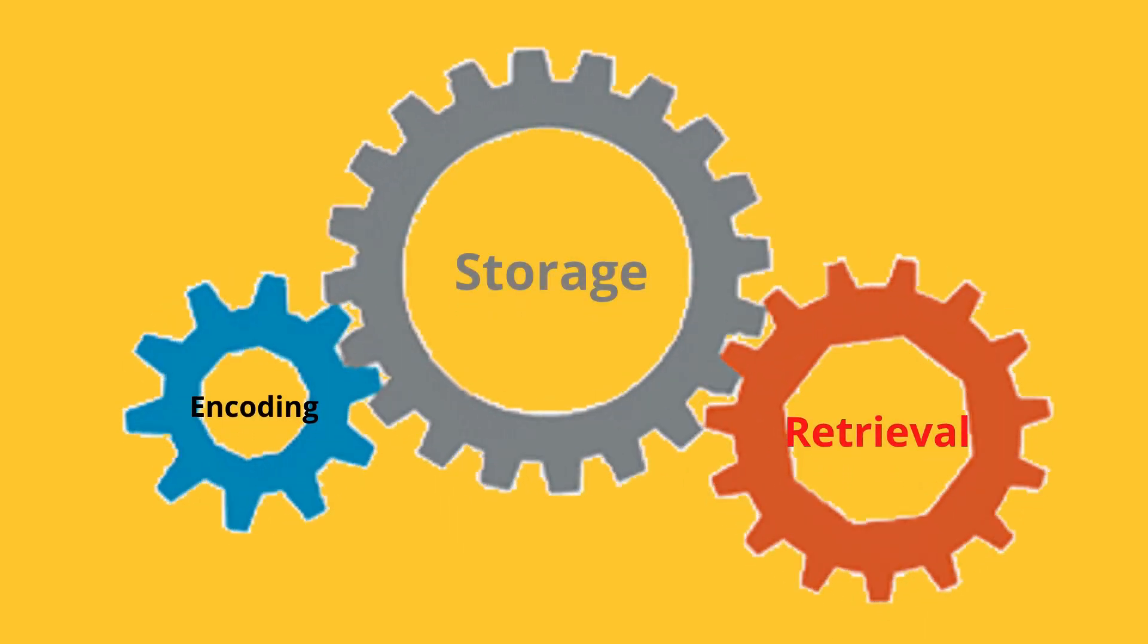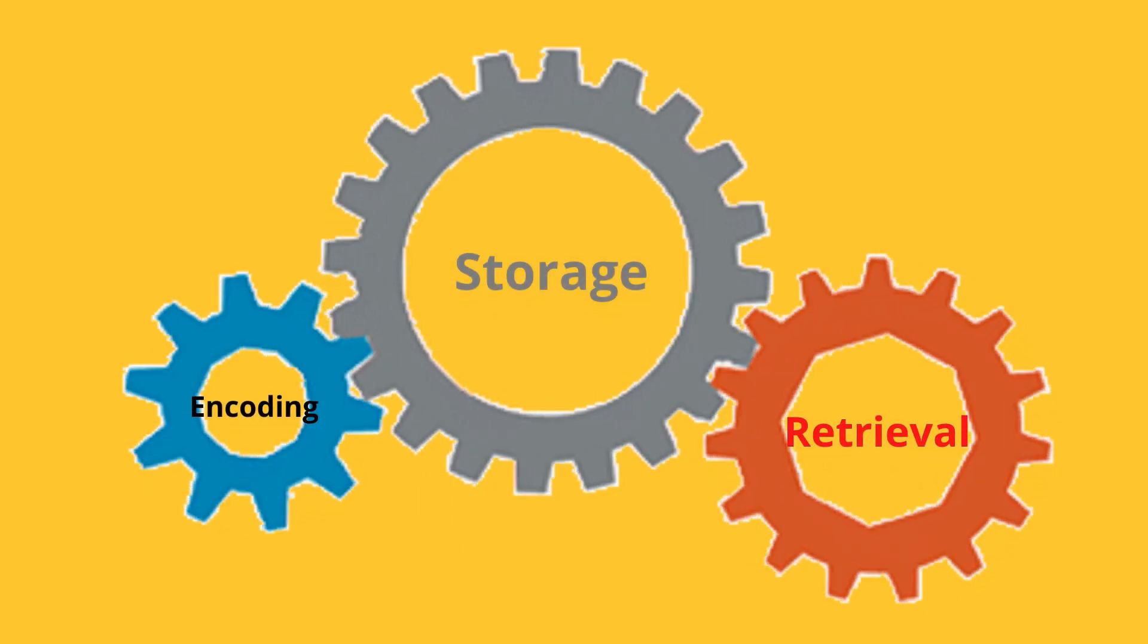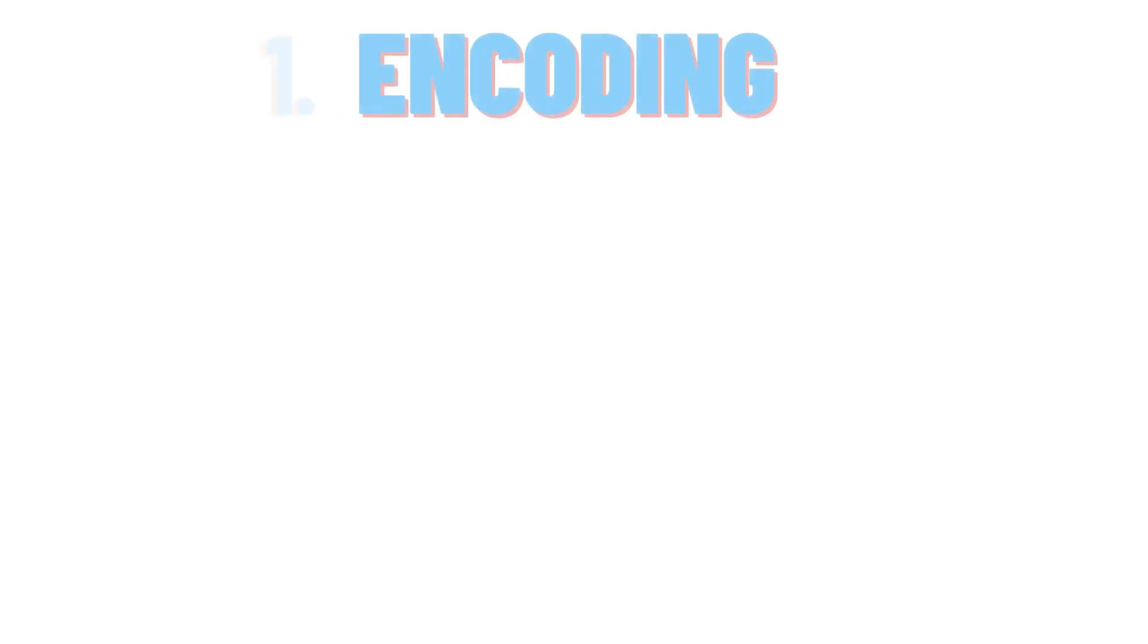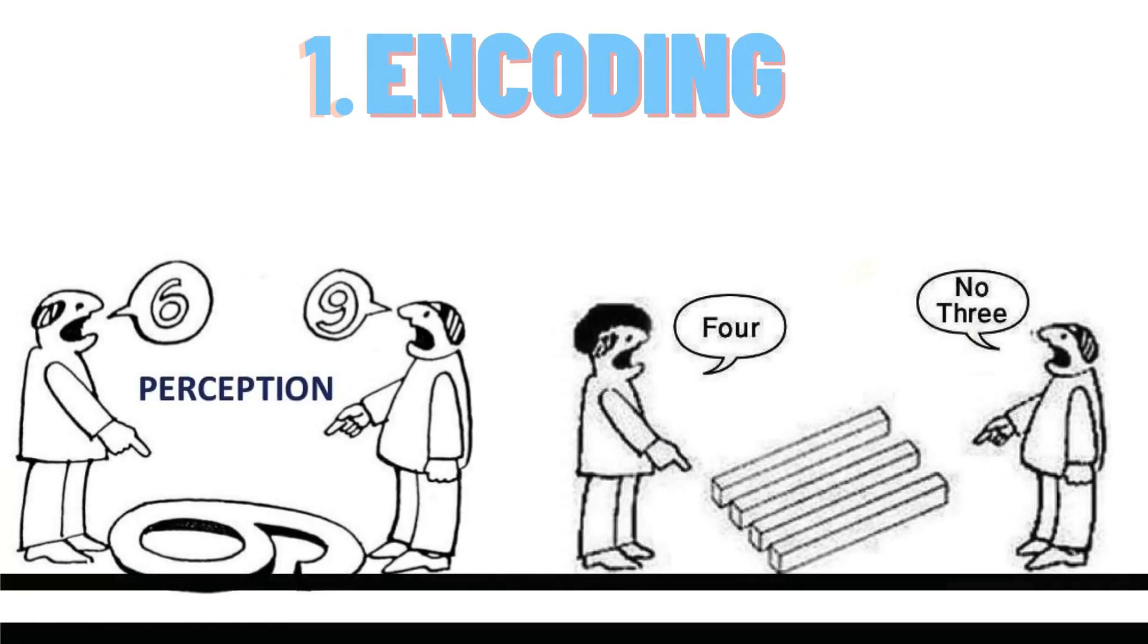The process of memory begins with encoding, storing and retrieval. Encoding. Encoding begins with perception.